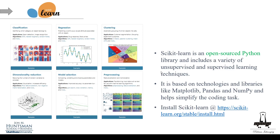scikit-learn is an open source Python library that includes a variety of supervised and unsupervised learning techniques. You can do classification, regression, and clustering for supervised learning, and dimensionality reduction for unsupervised learning. You can also do preprocessing, grid search, and cross-validation for model selection.